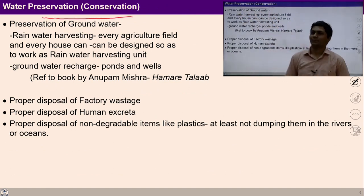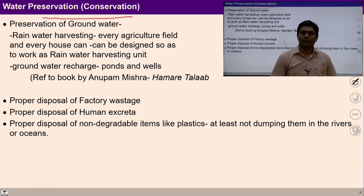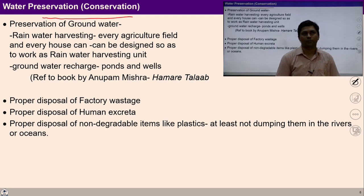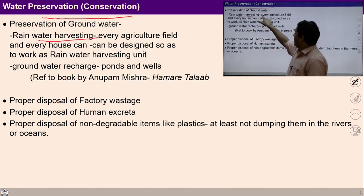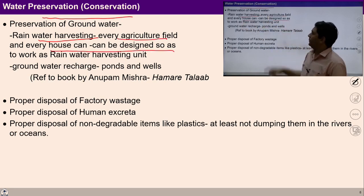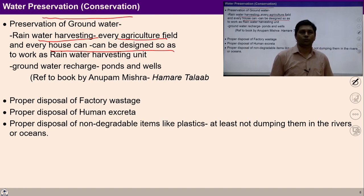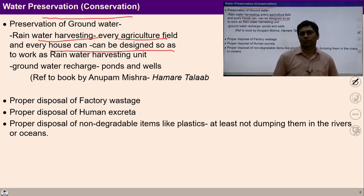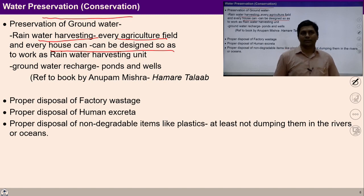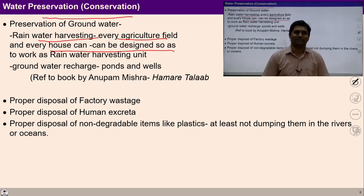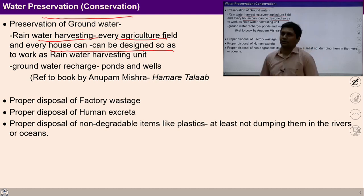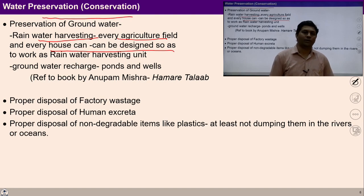For example, water preservation. There is a need to preserve water, and there are many ways to preserve rainwater — for example, rainwater harvesting. Every agriculture field and every house can be designed in a manner to work as a rainwater harvesting unit. There is a need to show creativity, to evolve such kind of social structures and architecture so that every house can work as a unit of water conservation. If we are able to do this, there will be enough water on the earth.